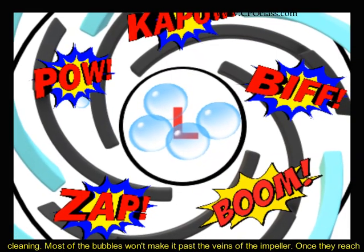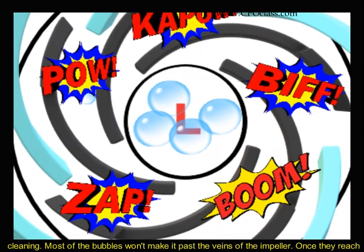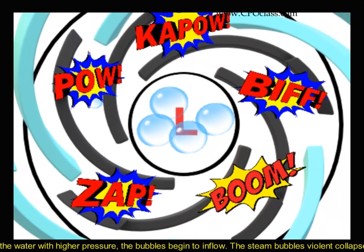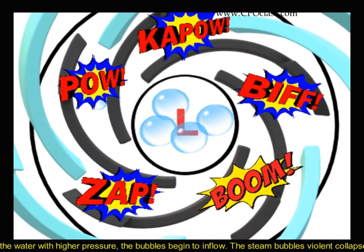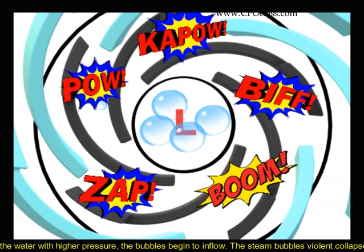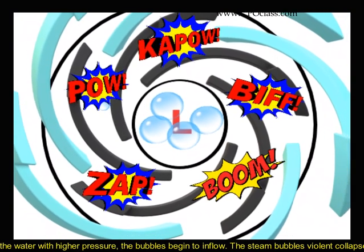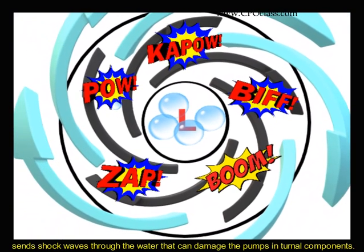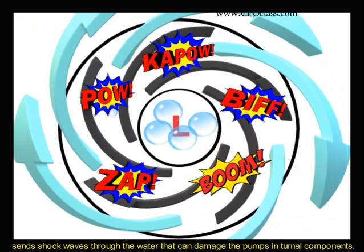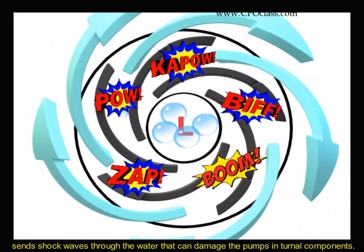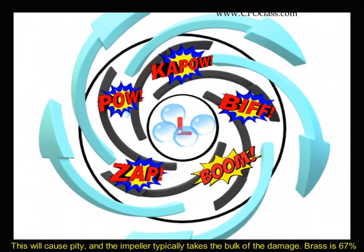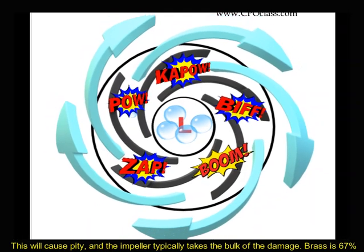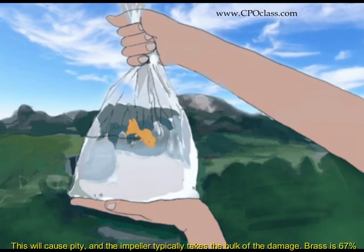Most of the bubbles won't make it past the veins of the impeller. Once they reach the water with higher pressure, the bubbles begin to implode. The steam bubble's violent collapse sends shockwaves through the water that can damage the pump's internal components. This will cause pitting, and the impeller typically takes the bulk of the damage.